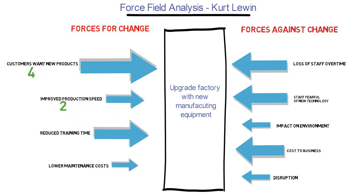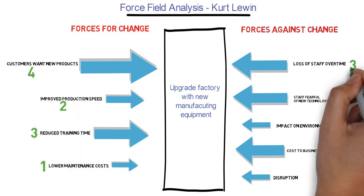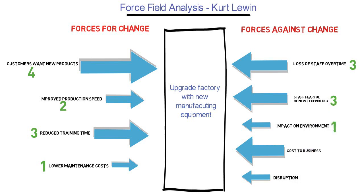Next, assign a score to each force. For example, 1 is a weak force and 5 is a strong force. And then add up the scores for each column.